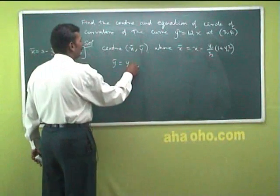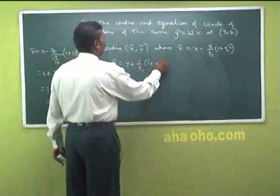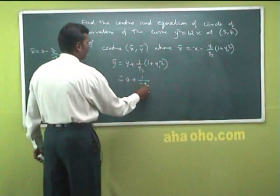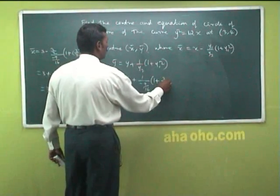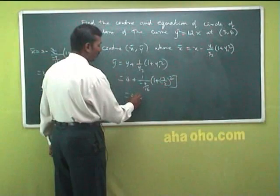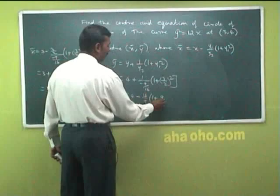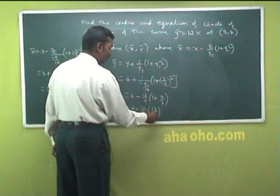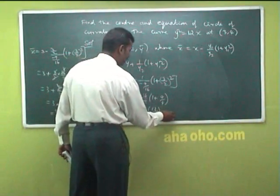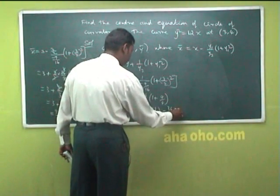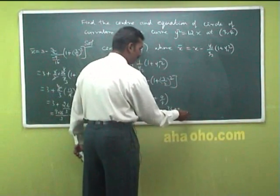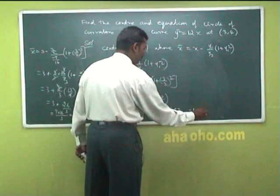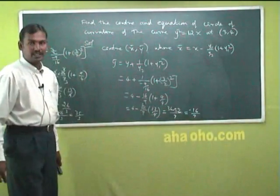Similarly, ȳ = y + (1/y₂)(1 + y₁²) = 4 + (1/(−9/16)) · (1 + (3/2)²) = 4 + (−16/9) · (1 + 9/4) = 4 + (−16/9) · (13/4). Simplifying: 4 − 52/9 = (36 − 52)/9, giving ȳ = −16/9.